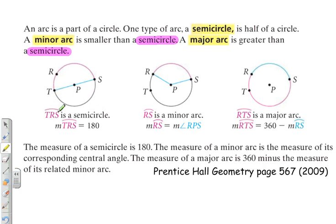This would be red. Arc TRS is a semi-circle, so TRS, what I just highlighted in pink, is a semi-circle. So the measure of arc TRS is equal to 180 degrees.